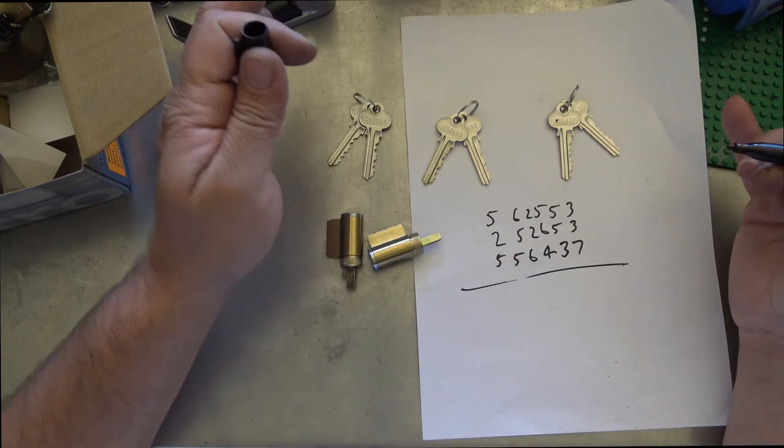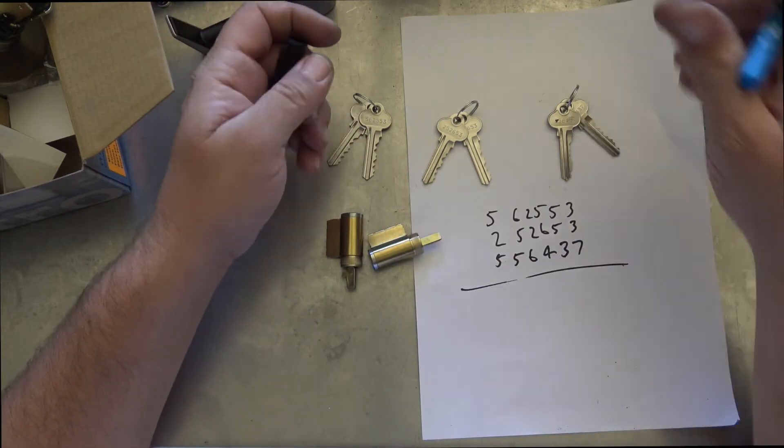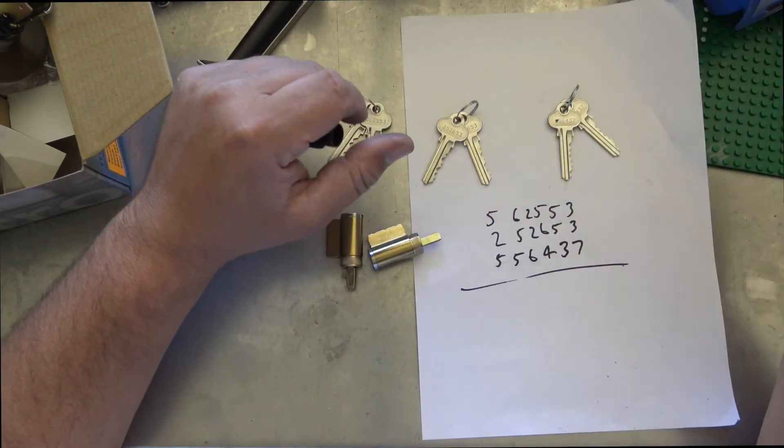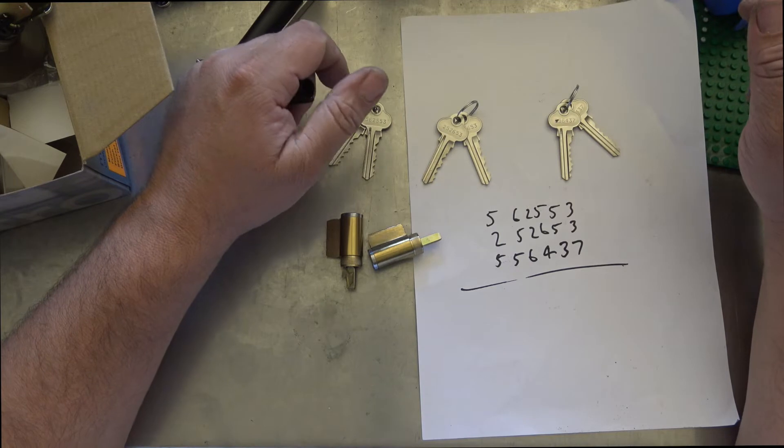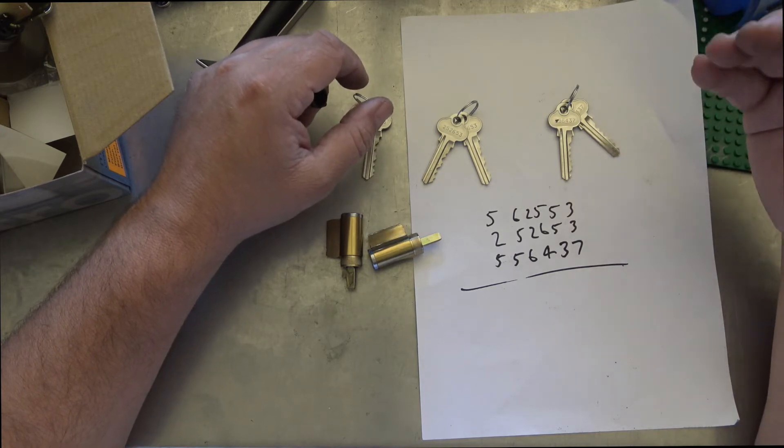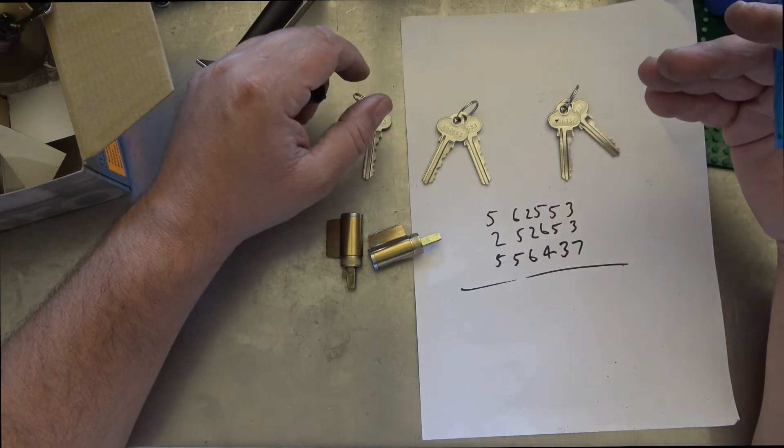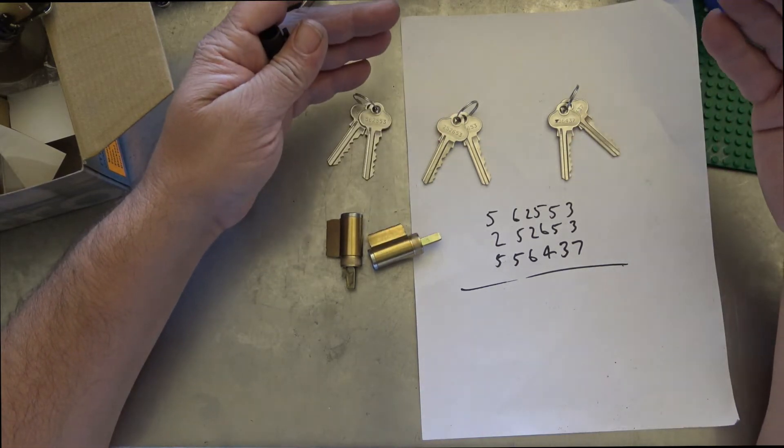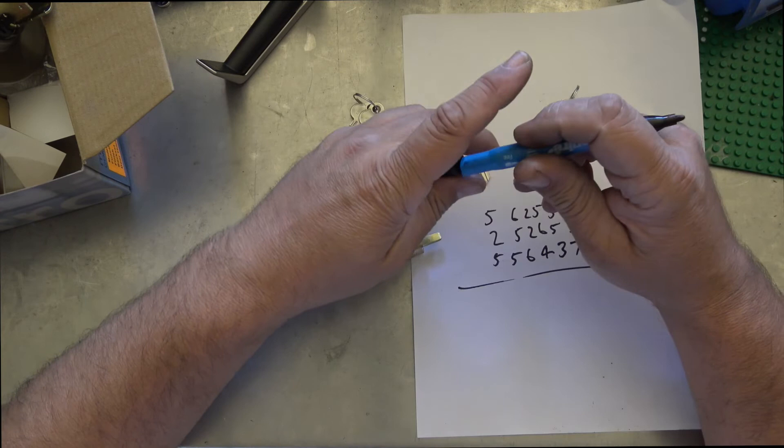Now we could make all of these keys work by using master pins. Little tiny pins in here to create more shear lines, but that would just lower the security in the actual lock. So the customer then won't be getting the maximum amount of security out of their lock cylinder because it'll be working the two keys that we've made it work plus a few phantom keys or other keys that might be in that combination.